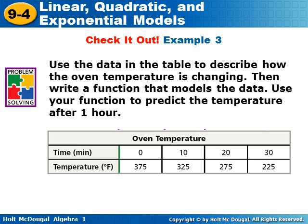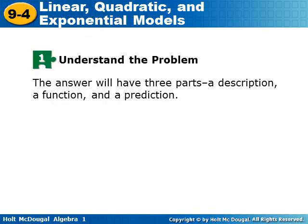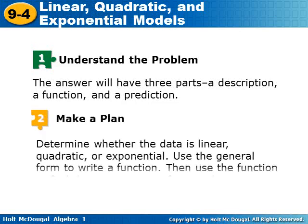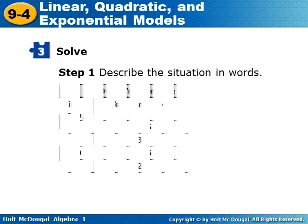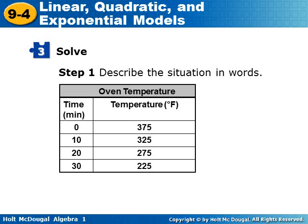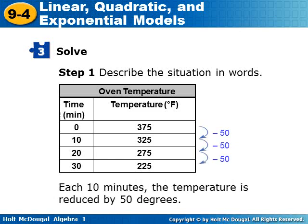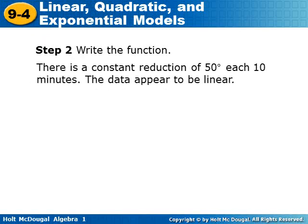Use the data in the table to describe how the oven temperature is changing, then write a function that models the data. Use the function to predict the temperature after one hour — try this one on your own, then check back. The answer has three parts: a description, a function, and a prediction. The data shows time in minutes 0, 10, 20, 30 with temperatures 375, 325, 275, 225. For every 10 minutes, the temperature is reduced by 50 degrees. There's a constant first difference of minus 50, so the data appears to be linear.